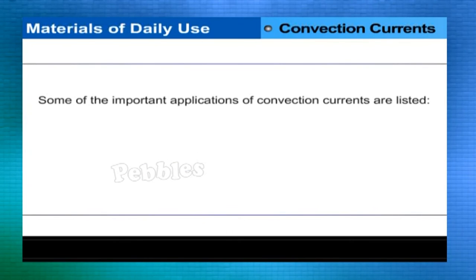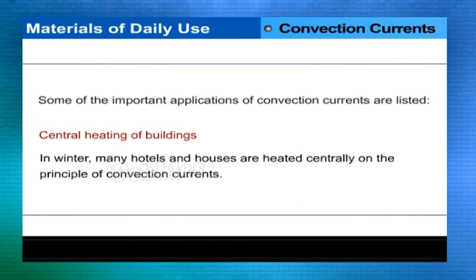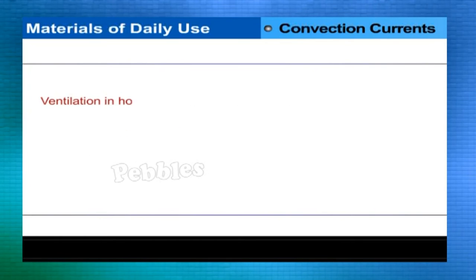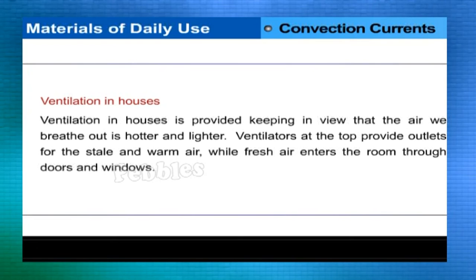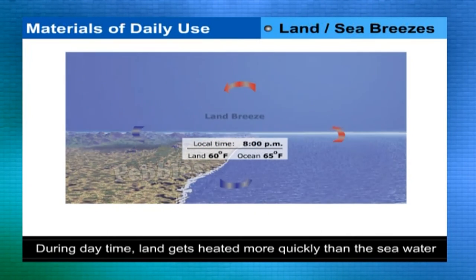Applications of convection currents: central heating of buildings — in winter, hotels and houses are heated centrally on the principle of convection. Ventilation in houses — ventilators at the top provide outlets for stale warm air while fresh air enters through doors and windows. Land and sea breezes — during daytime, land heats more quickly than sea water.